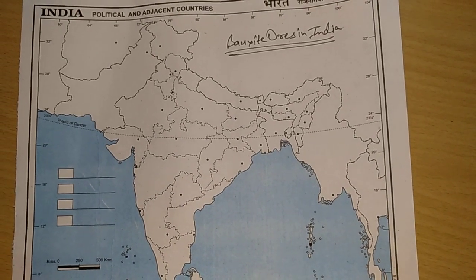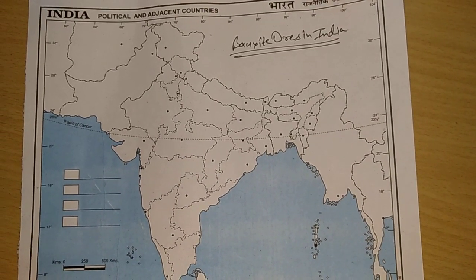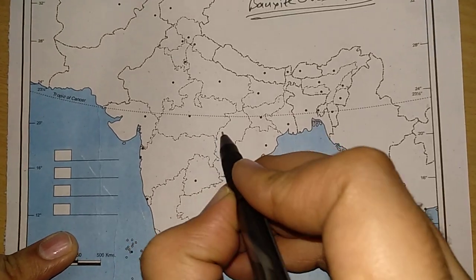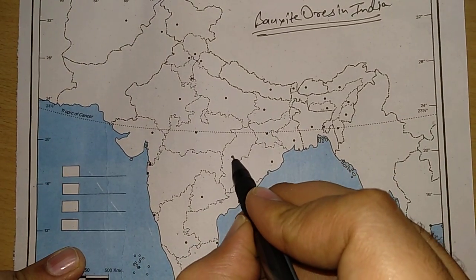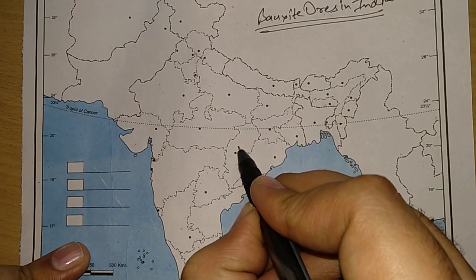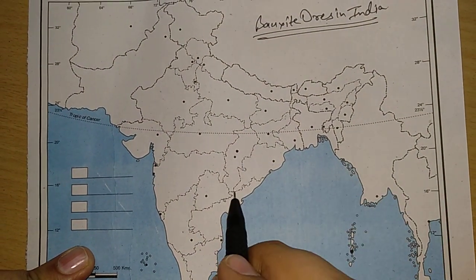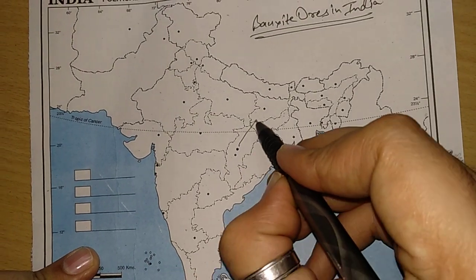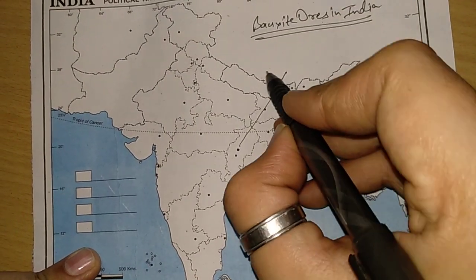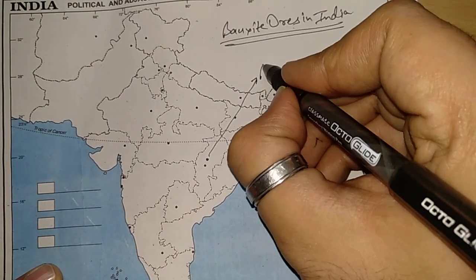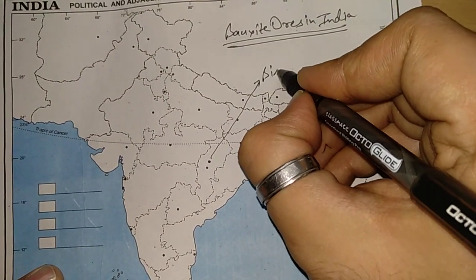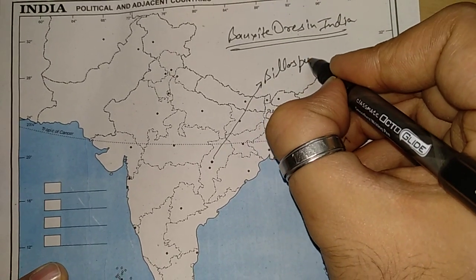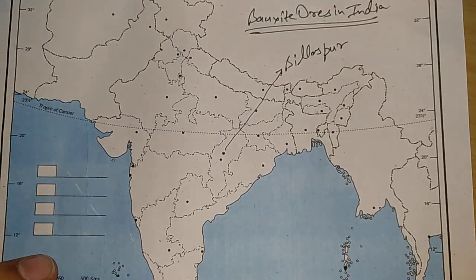Guys, first of all, you have to call Bilaspur. Bilaspur — where are you? This is the 36th area. This is the capital. The capital is the 36th area. You can fill it at the top. This is Bilaspur.